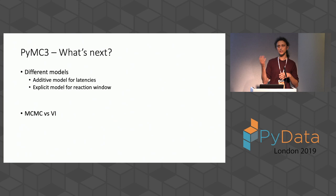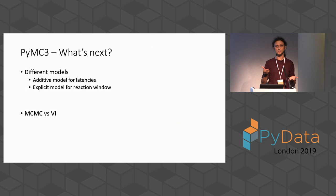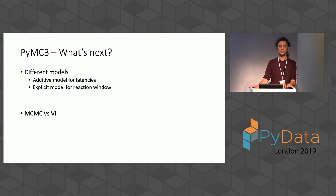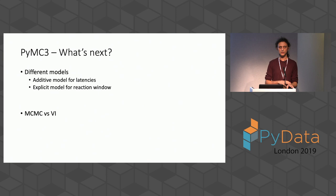That's where I'll stop with PyMC. There are more things we could have explored: adding more detail to the model by looking at each component causing latencies and creating an additive model; modeling the reaction window more explicitly; and comparing Markov chain Monte Carlo versus variational inference to see how much our estimations change.